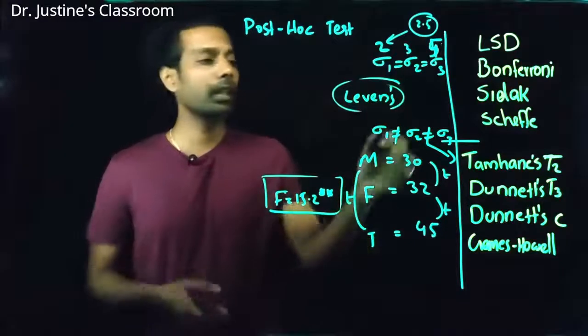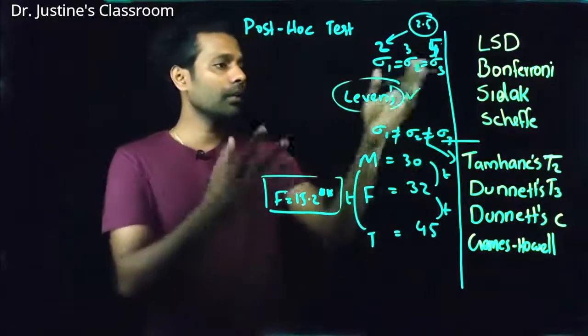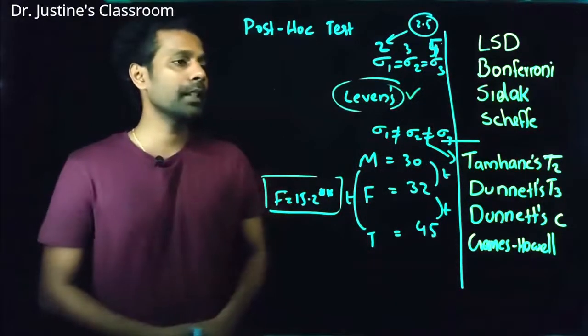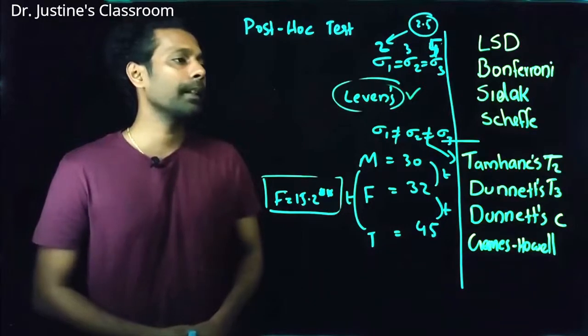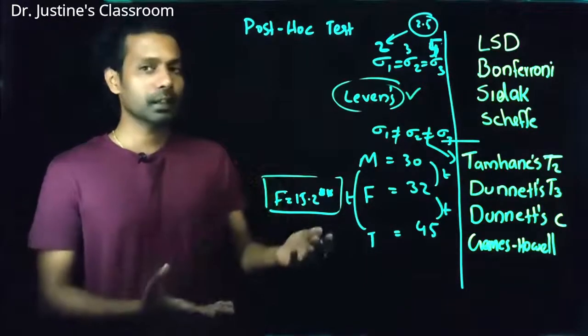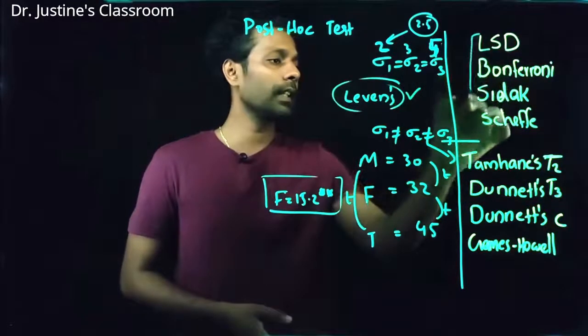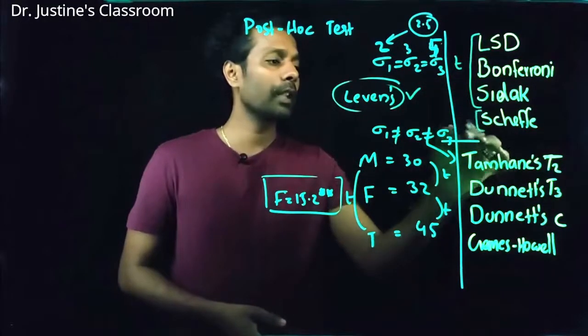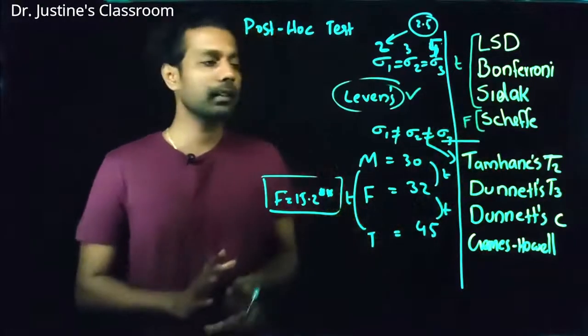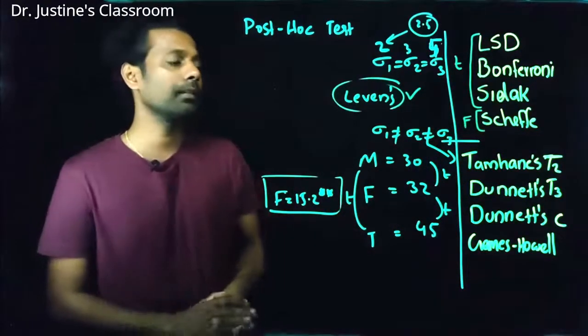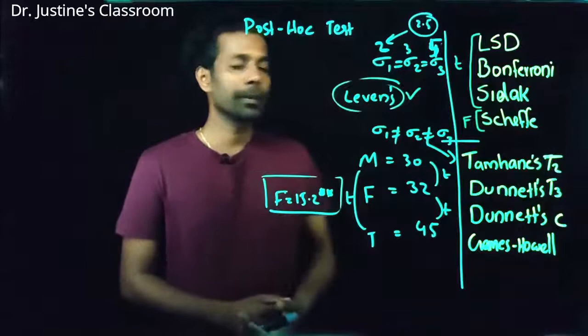Otherwise, generally standard protocol, you can go for Levene's test. Now, different type of test. So first one is the LSD. Another classification also. So these three analyses are based on T distribution. This one is based on F distribution. I guess that's a very good differentiation between this method.